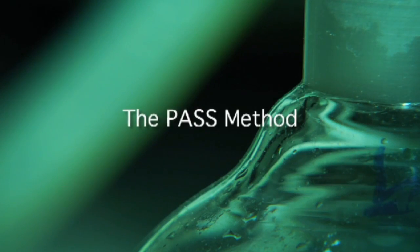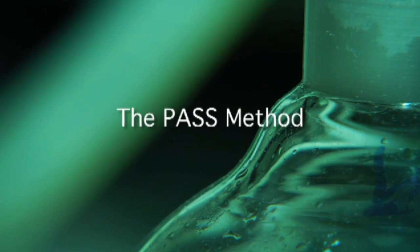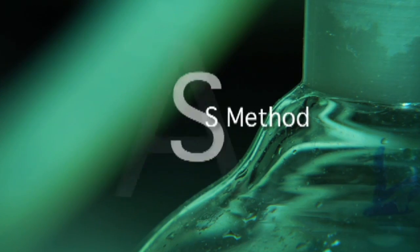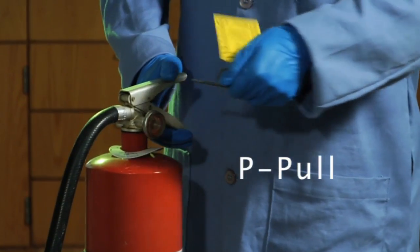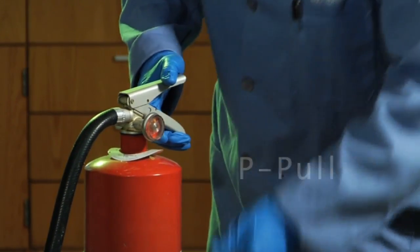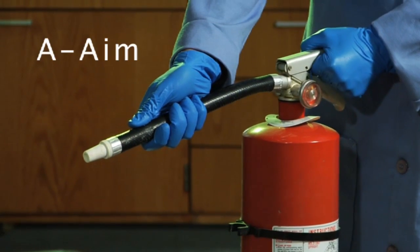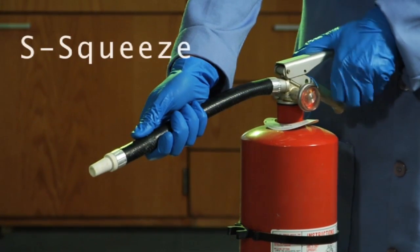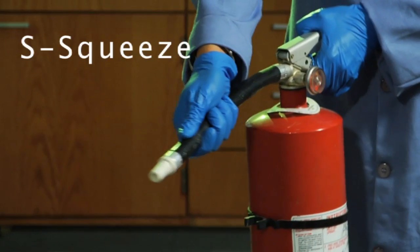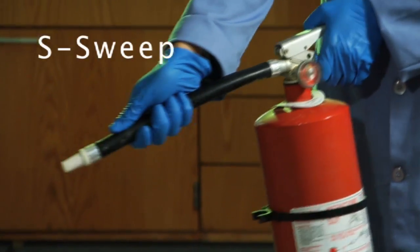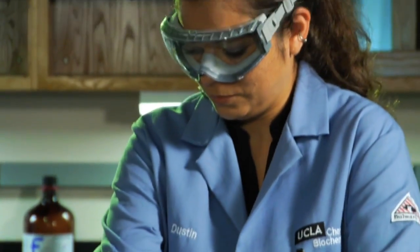Once properly trained on how to use a fire extinguisher, always remember to use the PASS method. P pull and twist the safety pin from the handle. A aim at the base of the fire. S squeeze the handle trigger and S sweep from side to side the full length of the fire.